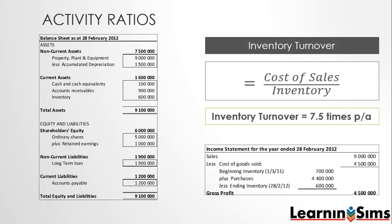This ratio can easily be converted into the average age of the inventory by dividing it into 360, which is the number of days in a year. In our example, we would divide 360 by 7.5 yielding 48 days. This value can be viewed as the average number of days it takes to sell all your inventory.